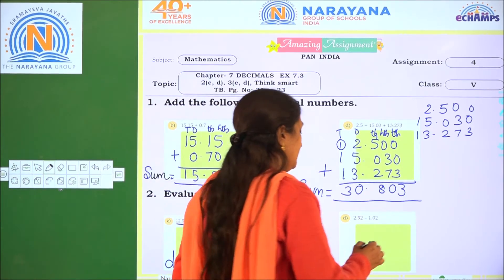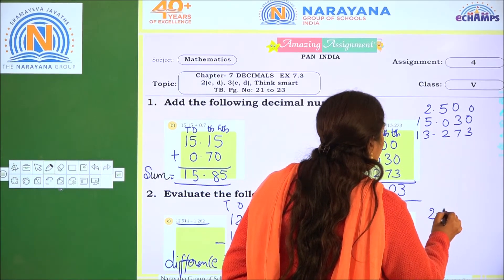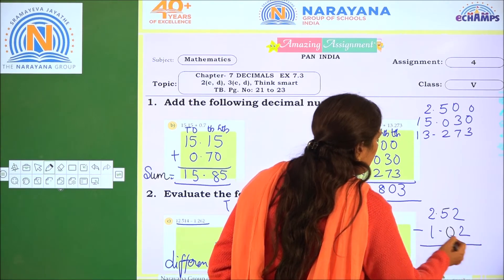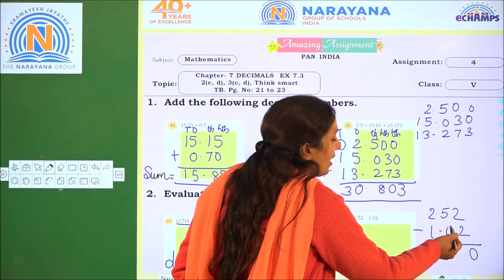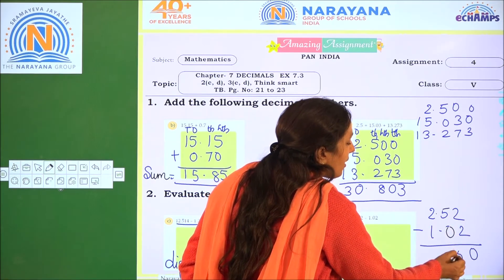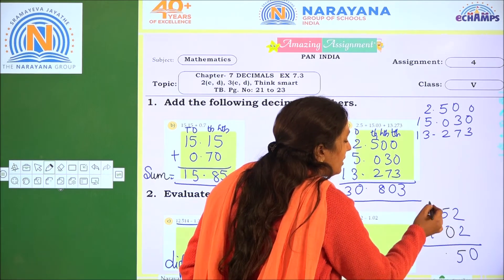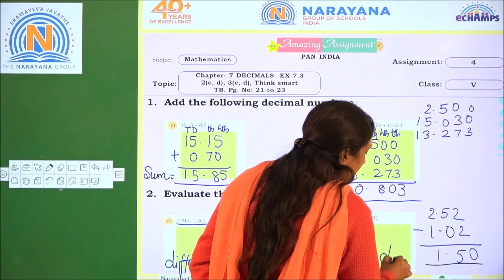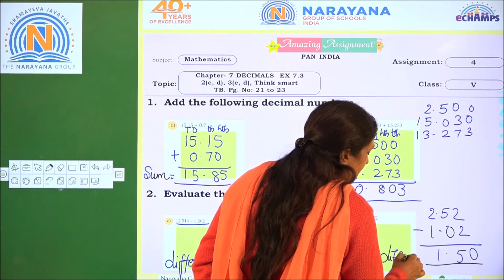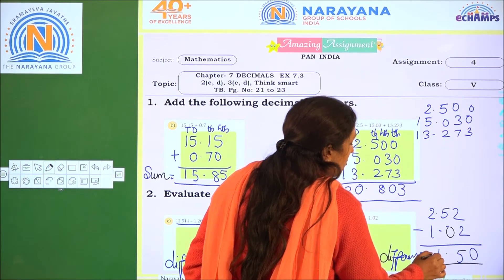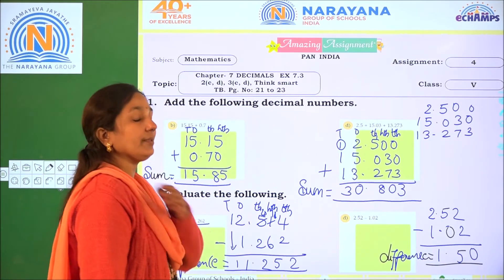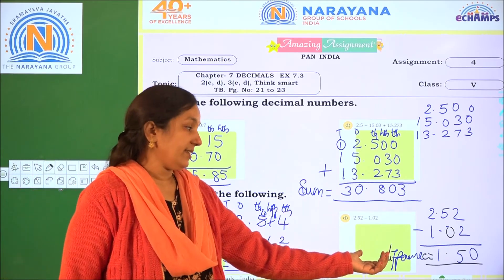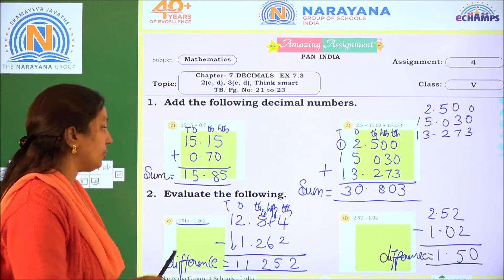Next subtraction: 2.52 minus 1.02. 2 minus 2 is 0. 5 minus 0 is 5, decimal point. 2 minus 1 is 1. So the difference is 1.50.